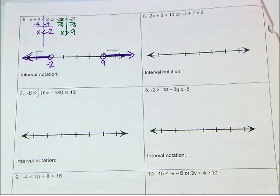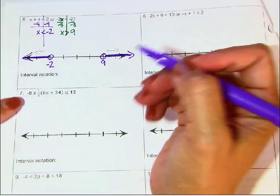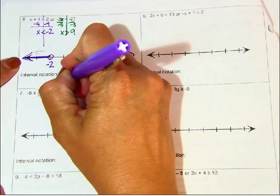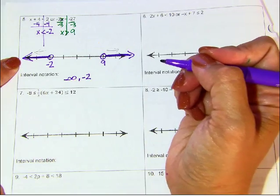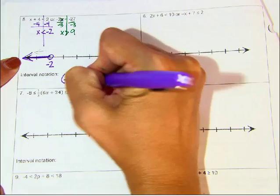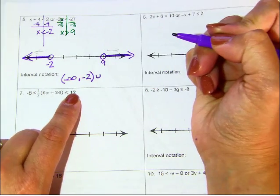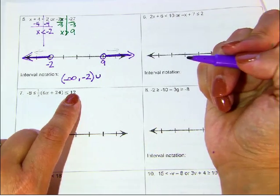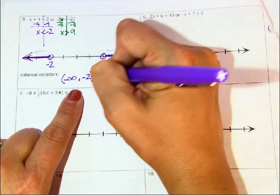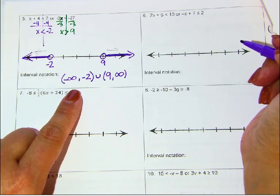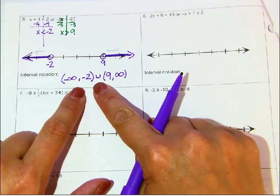If it said AND, they have to overlap in some place and that is the solution. If it uses the word OR, it does not. For interval notation, I have two graphs. Starting with the left side, it's going to negative infinity and stops at negative 2. Infinity always gets parentheses. It can't equal negative 2, so parentheses. We use the union symbol — that U shape with no line on the right side, just a curve. So it'll be (-∞, -2), union, (9, ∞). Parentheses around both because it does not equal 9.